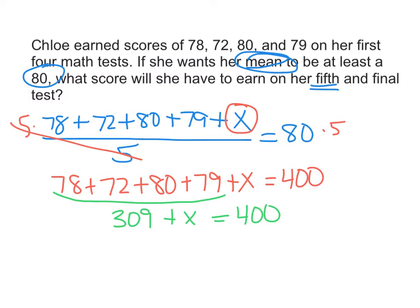So then the last thing I have to do is subtract 309 from both sides to get X alone. So these cancel, and X equals 400 minus 309, which is 91.